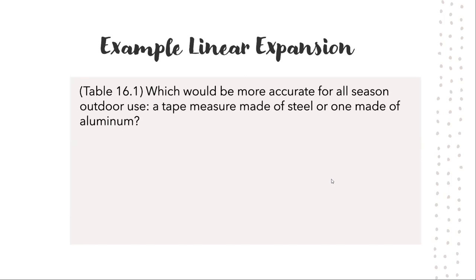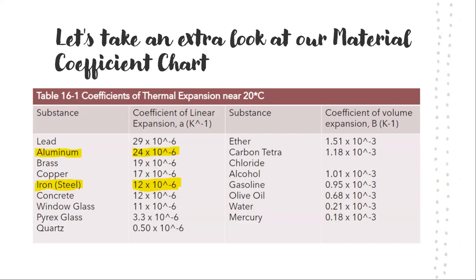For our first question, which would be more accurate for all season outdoor use? A tape measure made out of steel or one made out of aluminum? So here we are going to use the charts that I mentioned earlier, the material coefficient chart. And if you feel like you're ready to answer this question, you may pause the video, but I will be continuing. Here on this chart, I have highlighted for you the two substances that were mentioned in the question. So what we're going to do is just compare the two numbers with each other. So we see that aluminum has the higher coefficient compared to iron. So this means that aluminum is going to expand more in heat. So if we're going to be working outdoors, especially in the summer, the aluminum one will probably face more damage than the iron one. So which one would you choose if you were at the store?